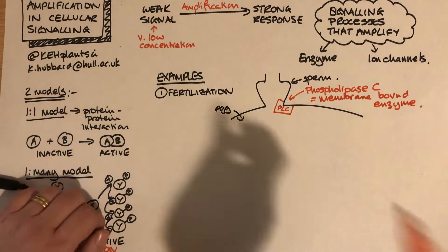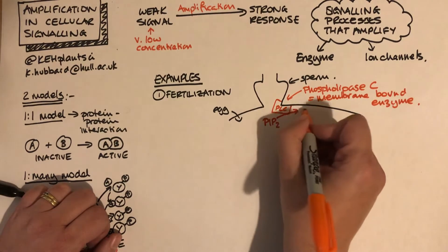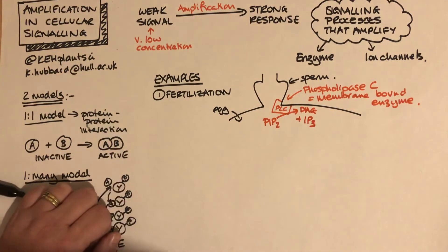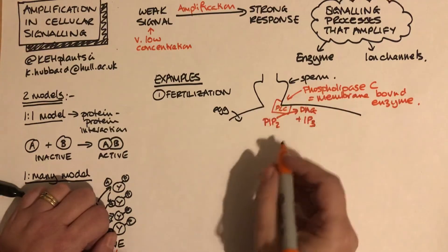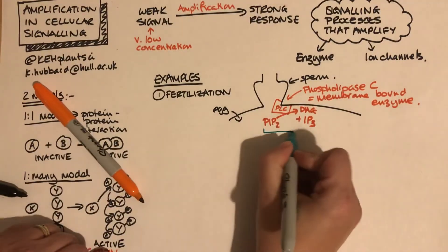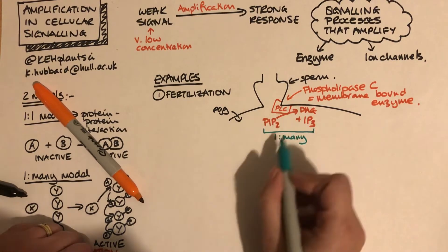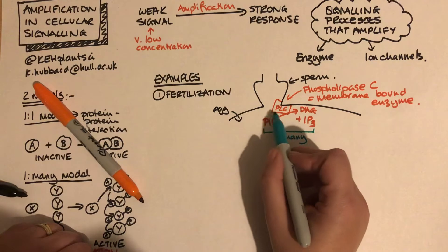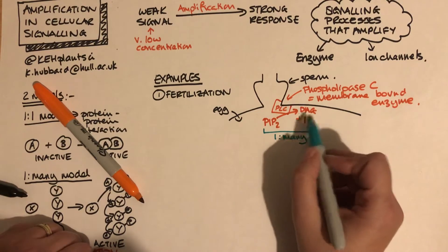What phospholipase C does is take a molecule called PIP2 and convert it into DAG and IP3, which is a secondary messenger. This is a one-to-many process. One phospholipase C protein, because it's an enzyme that can catalyze reactions again and again, can convert a thousand molecules of PIP2 into DAG and IP3. So we end up with a much stronger concentration of IP3 than we might expect.